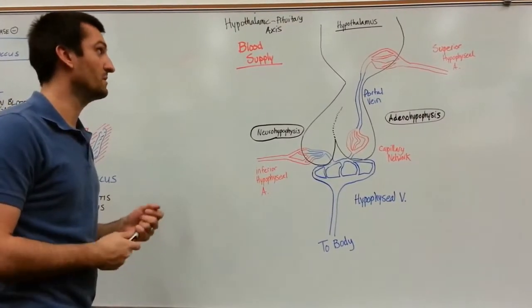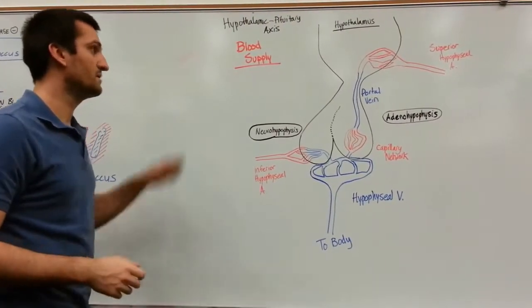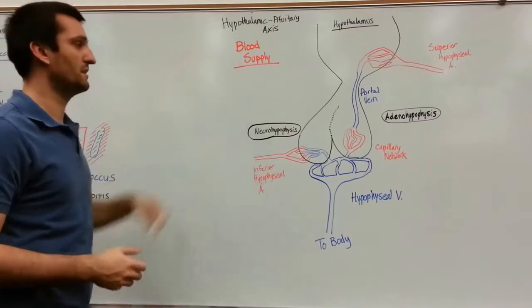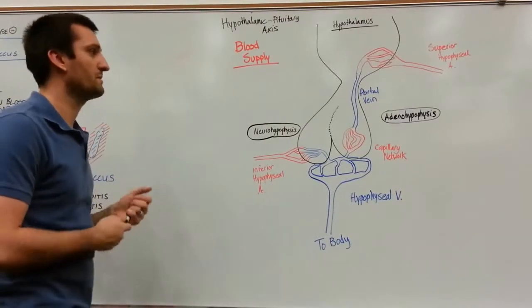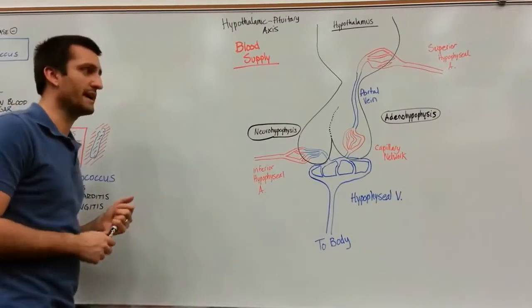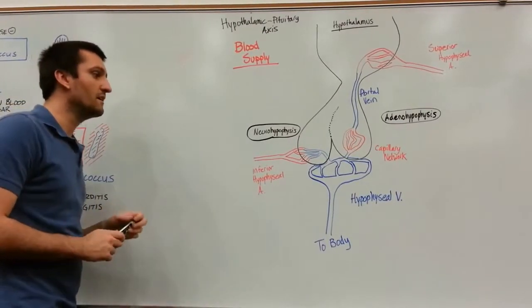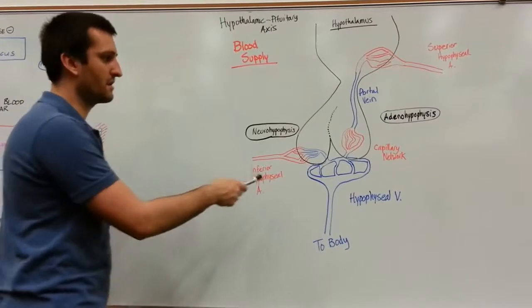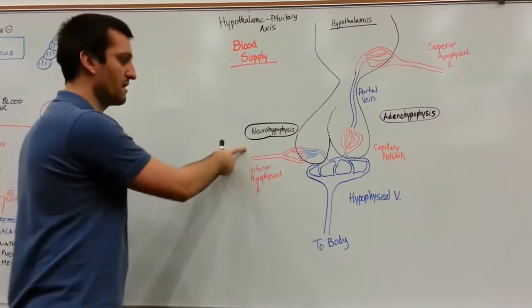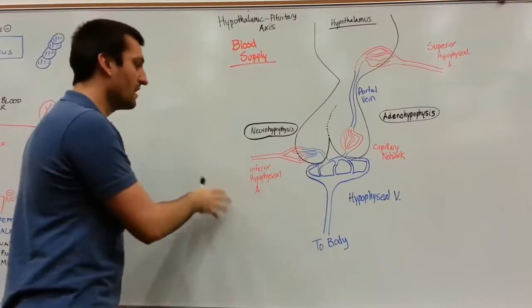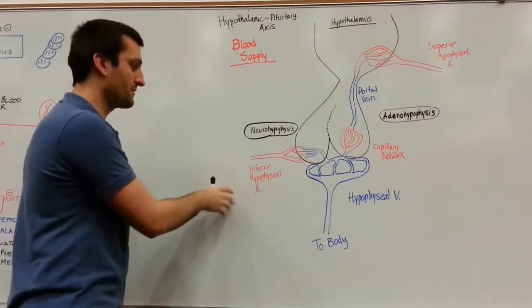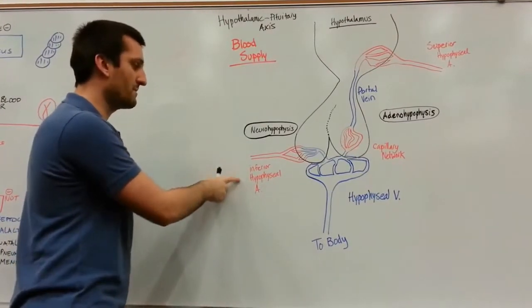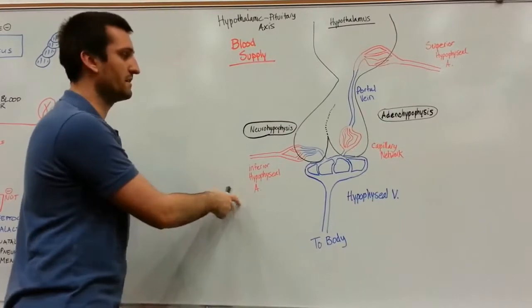So now we're going to go on to the blood supply of the hypothalamic-pituitary axis. We're first going to start off with the neurohypophysis, and it is going to get its blood supply from the inferior hypophyseal artery.